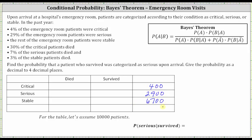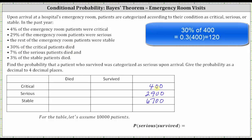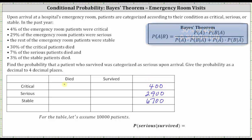Another way to determine this: 4% plus 29% equals 33%, and 100% minus 33% is 67%, so 67% were classified as stable. 67% of 10,000 is 6,700. Now let's determine how many died and how many survived. 30% of the critical patients died. To find 30% of 400, we convert 30% to a decimal and multiply: 0.3 times 400 equals 120. So 120 critical patients died.